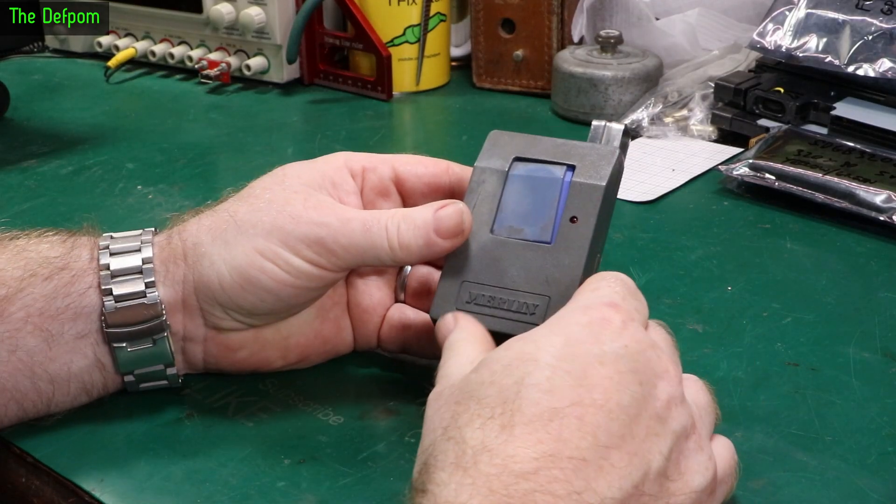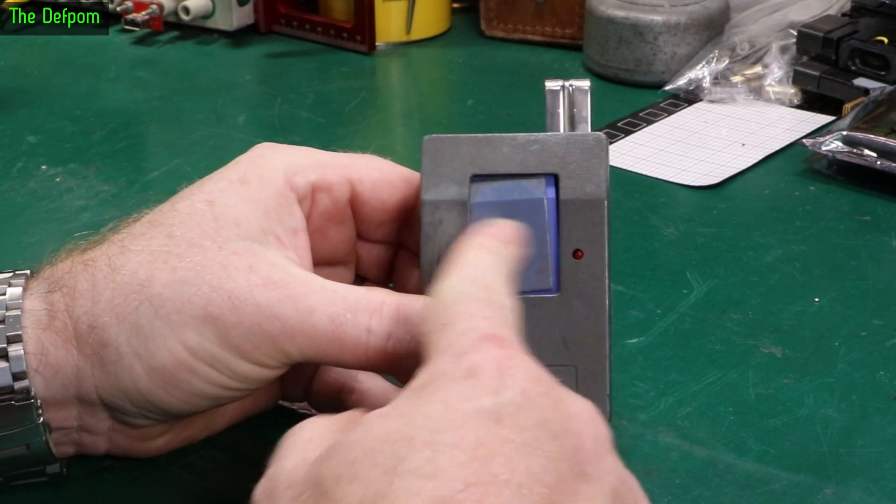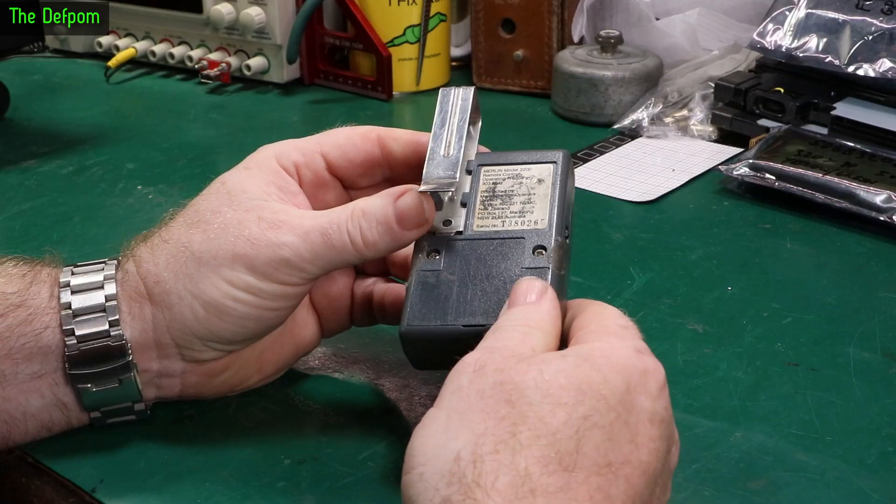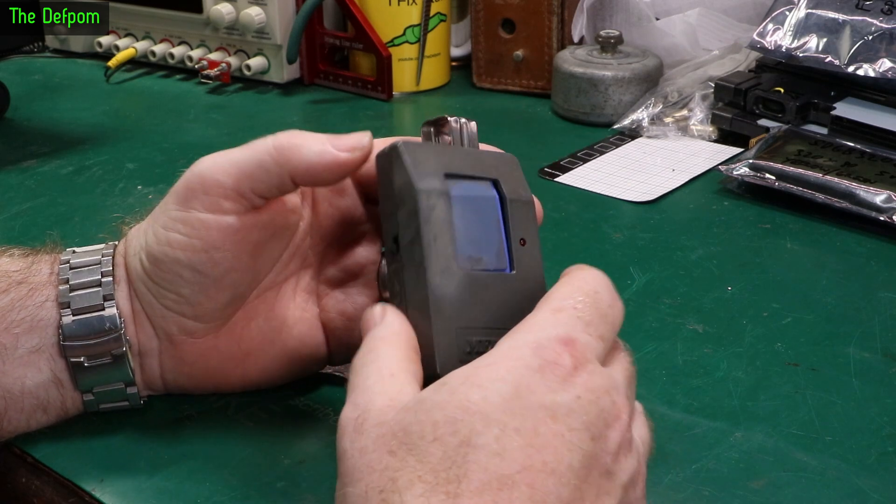Right, today we're going to look at this Merlin garage door opener. Apparently it's dead and you can probably see the button here is a bit damaged. We'll pull it apart and have a look. Apparently someone's already opened this up and had a look, well actually I know they've already opened it up and had a look.